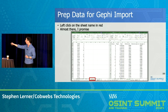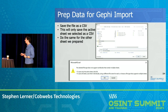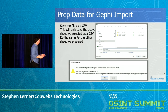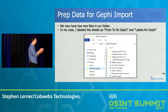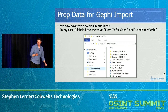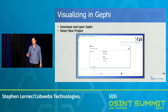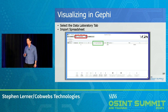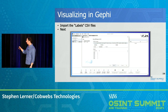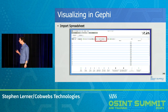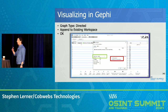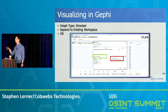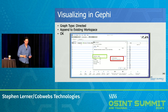Now save the data: click on the labels sheet and save the file as a CSV. When you save as CSV, it only saves the active sheet, not the entire workbook. Then do that for the other sheet as well — you'll have two CSVs: 'labels for Gephi' and 'from-to for Gephi' (the source and target sheet). Then go to Gephi — it's free software you can download. Go to New Project, Data Laboratory, Import Spreadsheet, and input the labels CSV. Click Next and create a new workspace. Then go back to Import Spreadsheet, import the from-to file, make sure the graph is set to Directed, and append it to the existing worksheet — that'll merge the two CSVs into one.